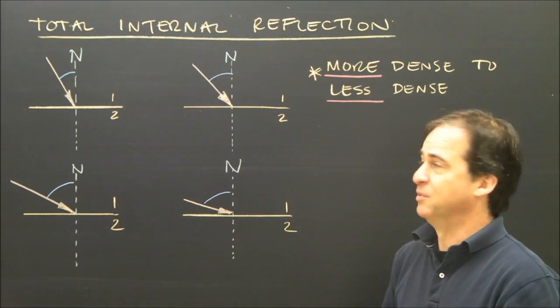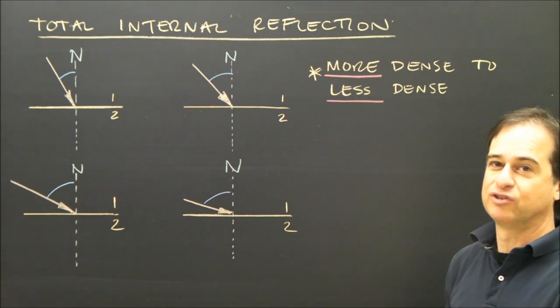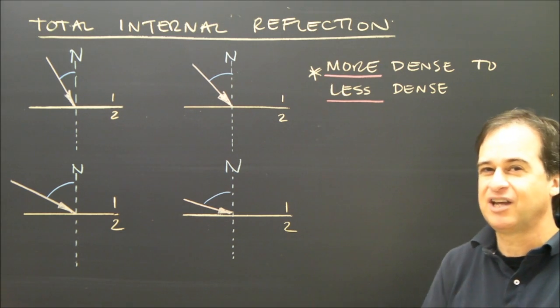So a typical one would be a diamond. If light is traveling from diamond to air, you would get total internal reflection at a certain angle. So let's look and see how this happens.